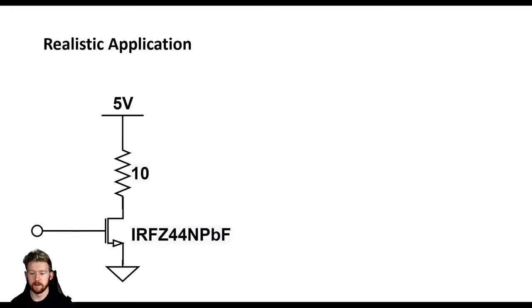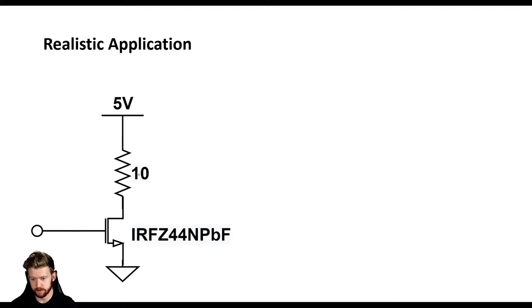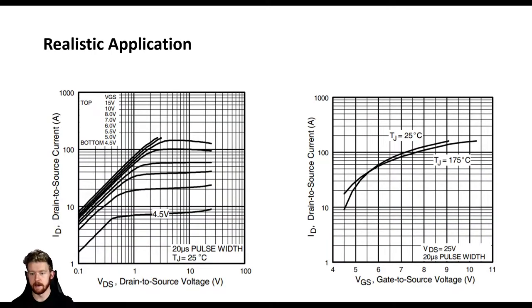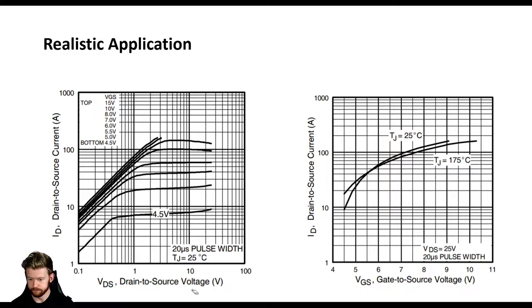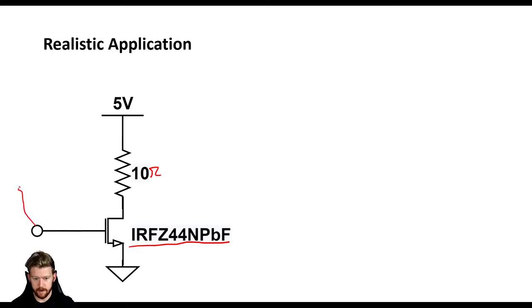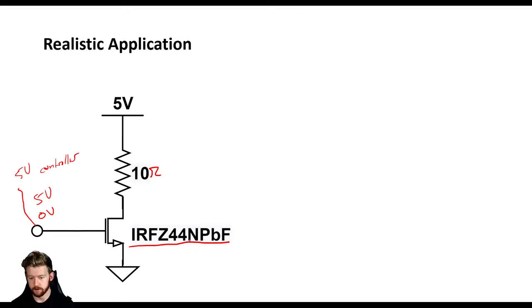Let's look at a realistic application, because things have been quite hand-wavy. We have a 5-volt supply, a 10-ohm resistor, and the MOSFET IRFZ44N PBF — an actual NMOS MOSFET. I pulled graphs from its datasheet: a VDS versus ID curve and a VGS versus ID curve. We'll assume this is hooked up to a 5-volt controller, so the gate signal is either 5 volts or 0 volts — a digital signal, not anywhere in between.